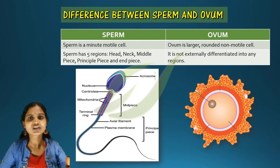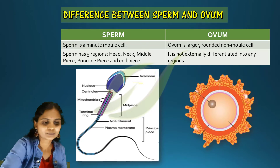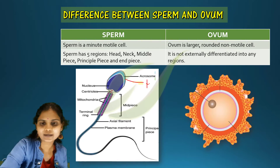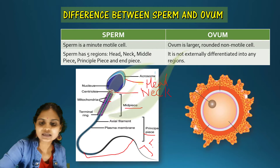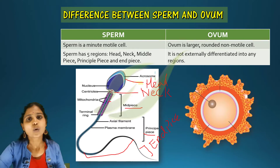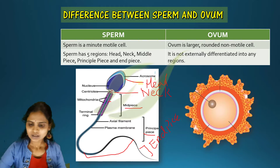Looking at the external structure of the sperm, it is divided into the head, neck, middle piece, principal piece, and end piece. Externally the ovum, however, is not divisible into many distinct regions.